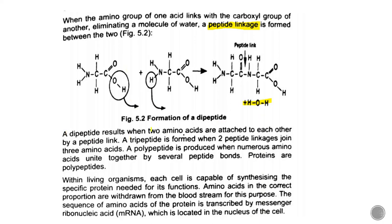A dipeptide results when two amino acids are attached through a peptide linkage. A tripeptide is formed when two peptide linkages join three amino acids. A polypeptide is produced when numerous amino acids are attached together by several peptide bonds.